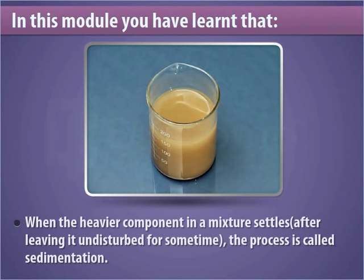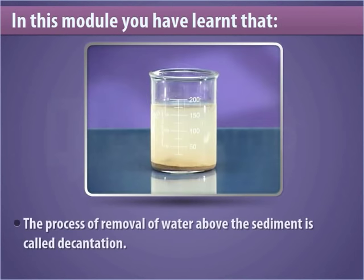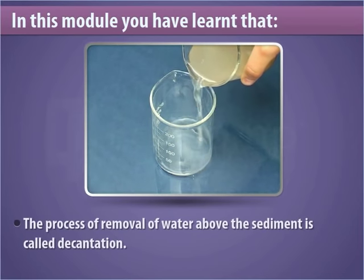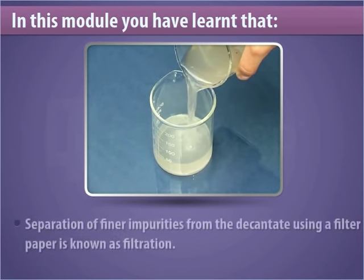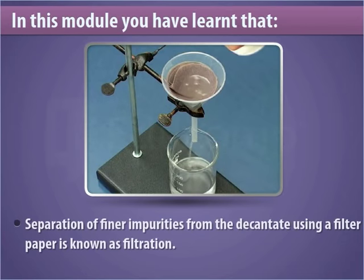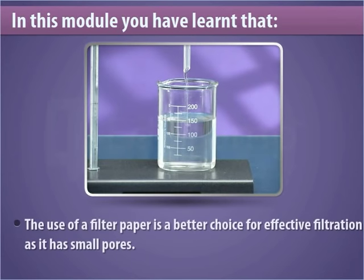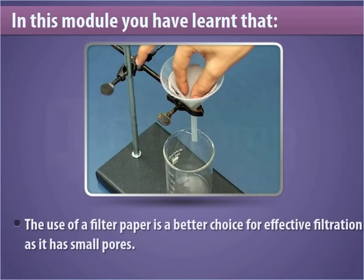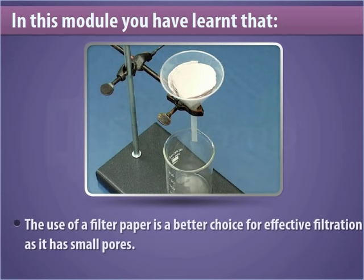In this module you have learned that when the heavier component in a mixture settles, the process is called sedimentation. The process of removal of water above the sediment is called decantation. Separation of finer impurities from the decantate using a filter paper is known as filtration. The use of a filter paper is a better choice for effective filtration, as it has small pores.